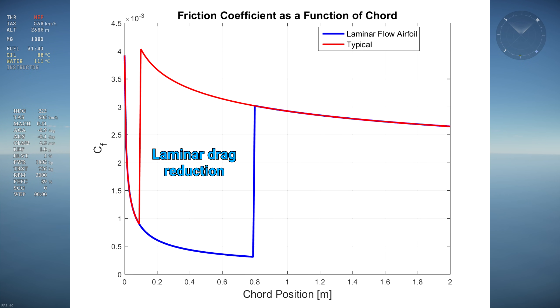At first glance, the laminar flow saves about a third of the drag of the typical airfoil because of the lower drag between 5 and 40% of the chord, and indeed the calculations show that the laminar airfoil has a 34% lower drag coefficient than the typical airfoil, which is significant.